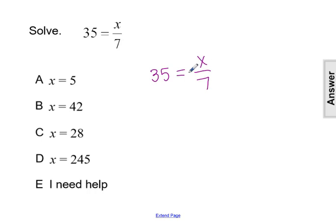So we need to use the inverse or opposite operation of dividing by 7, so we'll multiply by 7. But if I multiply the right side of the equation by 7, I have to multiply the left side of the equation by 7. I have to do the same thing to both sides of the equal sign to keep the equation balanced.